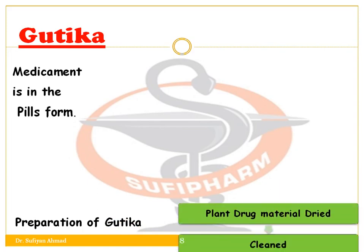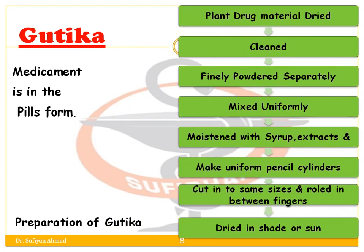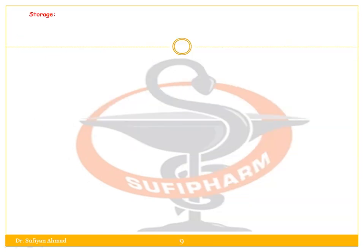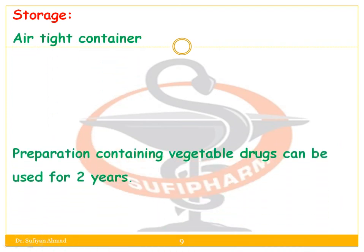Second is Gutika — it is the medicament in pills form. The plant drug material is dried, cleaned, and finally powdered separately, then mixed uniformly with minerals, metals, bhasma, and additives. It is moistened with syrup or extract, made into a uniform pencil-cylinder shape, and cut into the same size or rolled between the fingers.